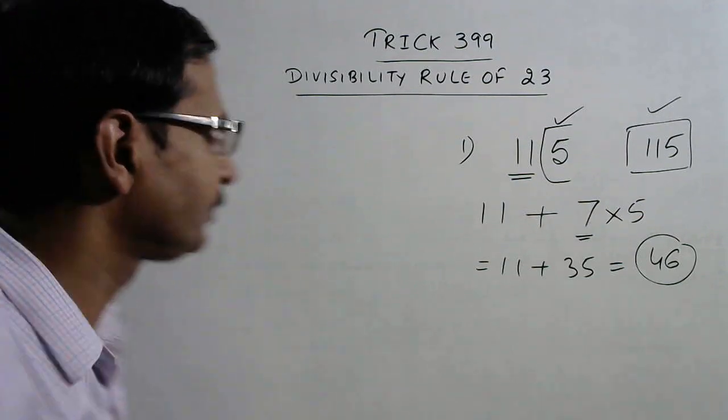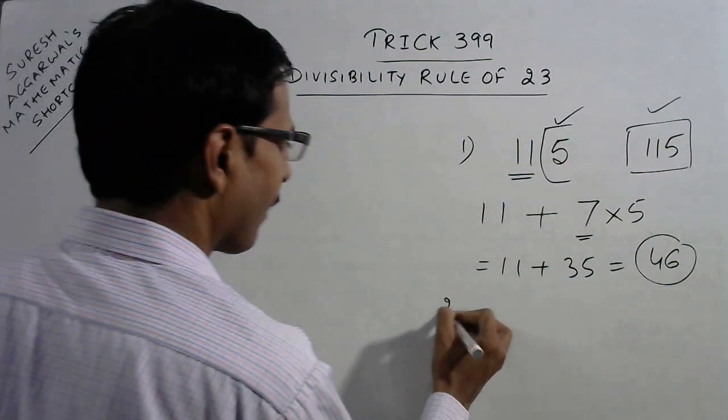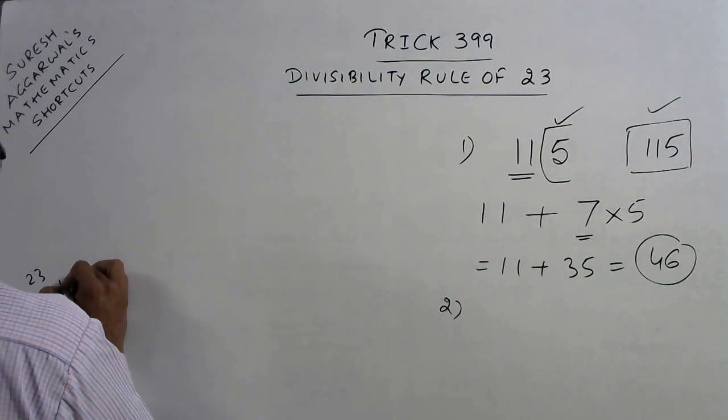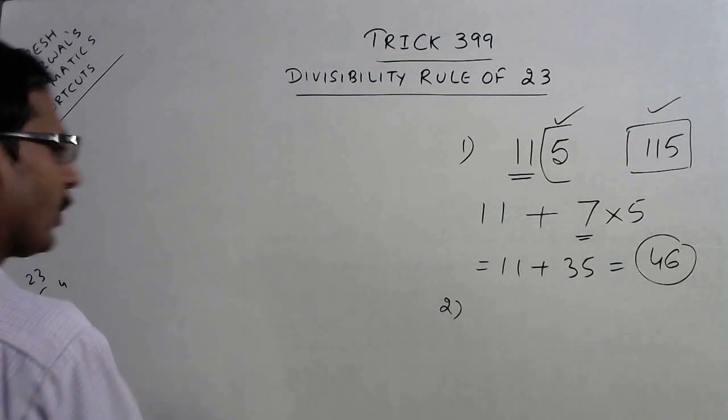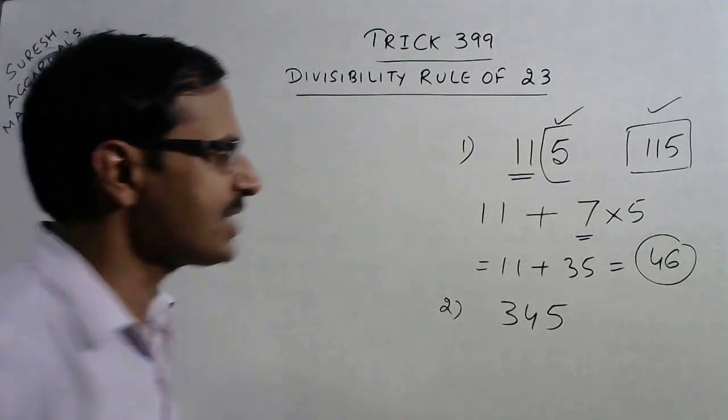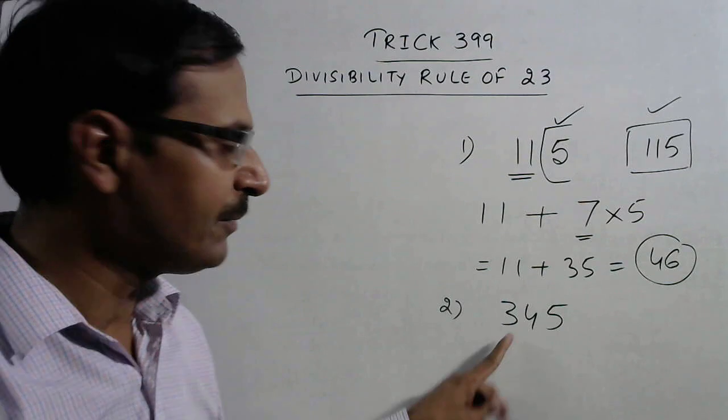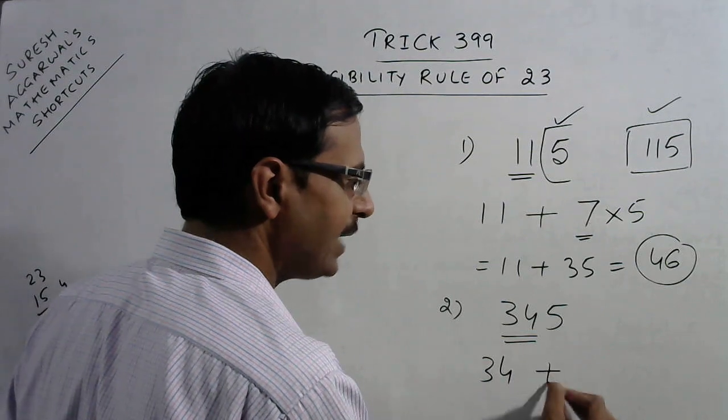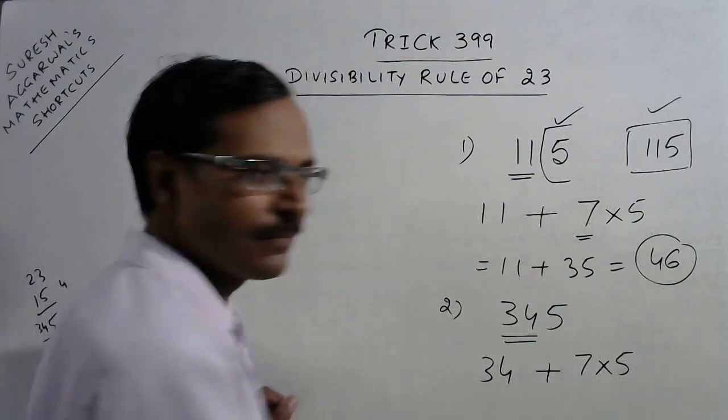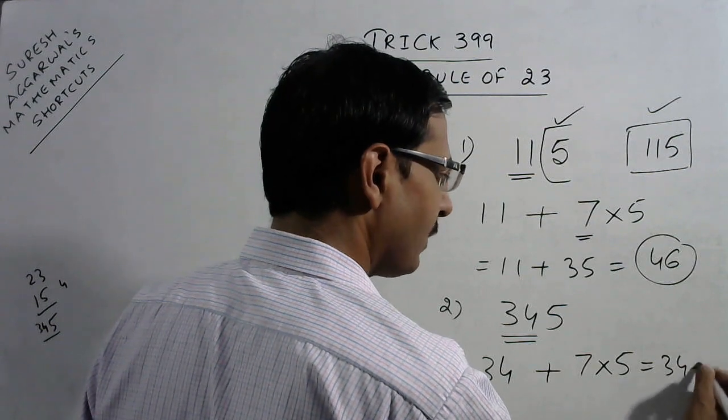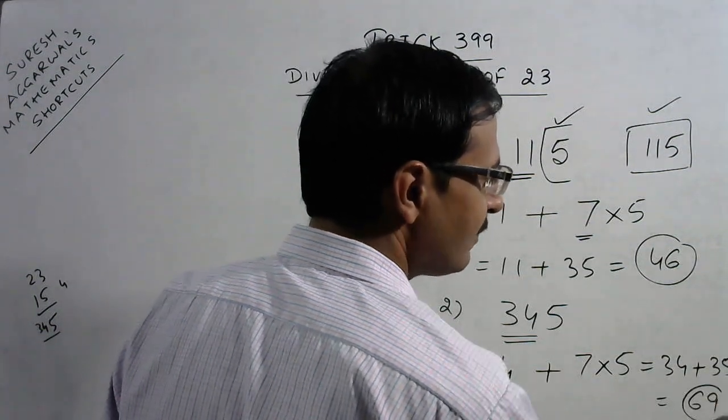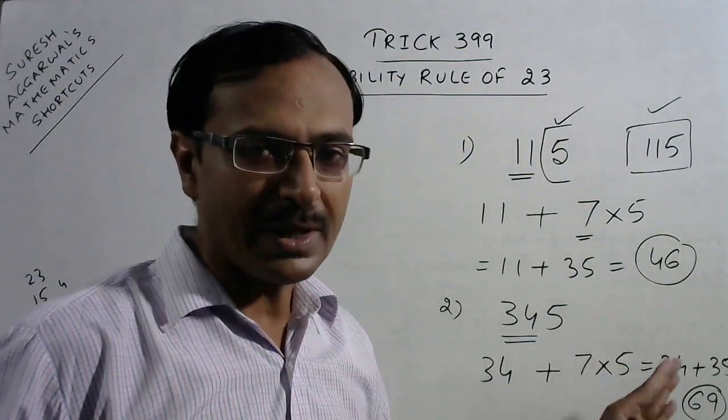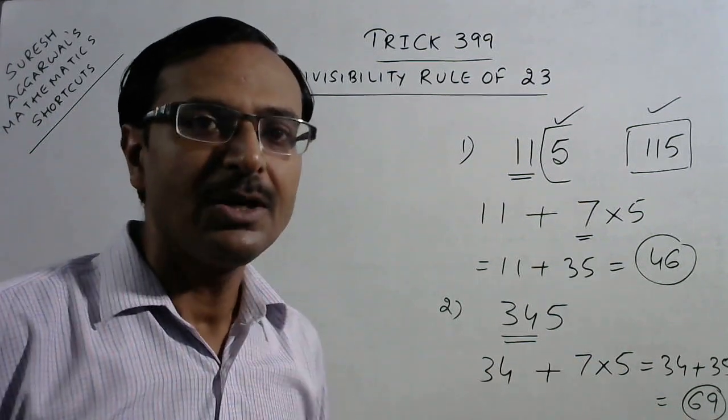Let us take some more examples. This time we have 345. Now let us check whether 345 is divisible by 23 or not. The remaining number is 34 and add 7 times the units place. So this becomes 34 plus 35 which is 69, and clearly 23 into 3 is 69. So 69 is divisible by 23, so the entire number 345 is divisible by 23.